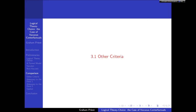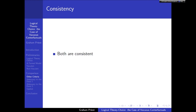The hardest criterion is adequacy to the data, so let me leave that till the end because it's the most complex. Let's deal with the other criteria first because they're relatively straightforward. One of these was consistency. Both of these theories are consistent, so there's nothing to choose between them there — we're not playing paraconsistent games here.